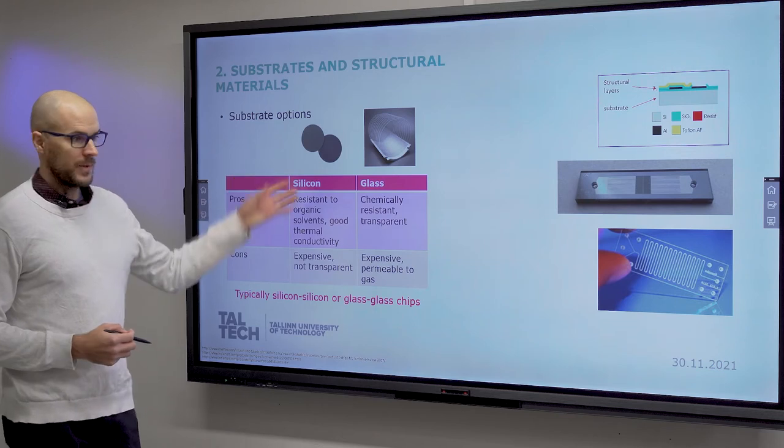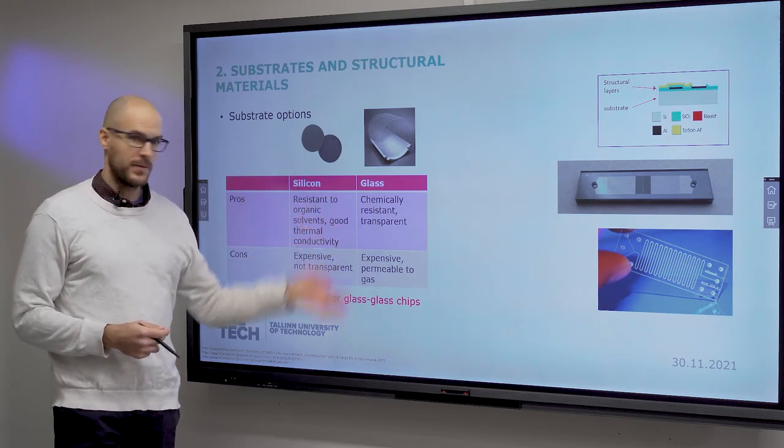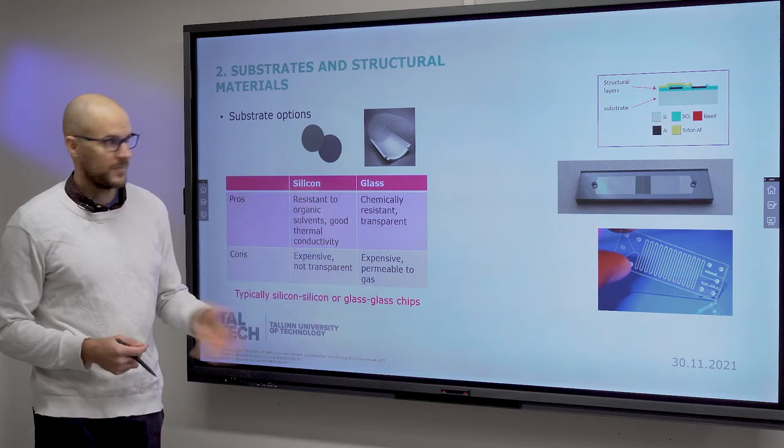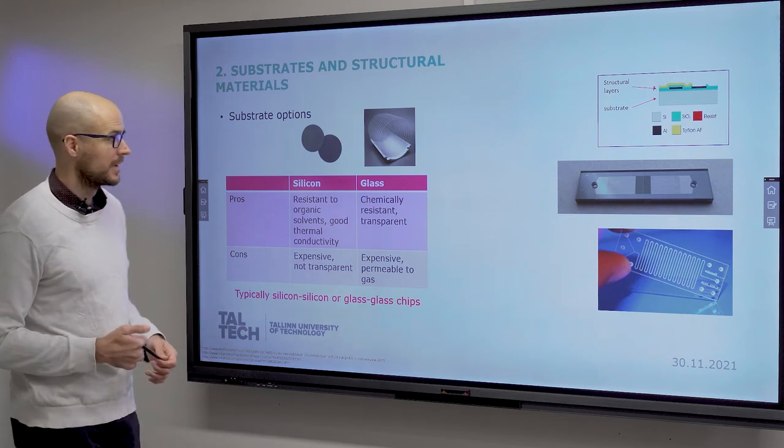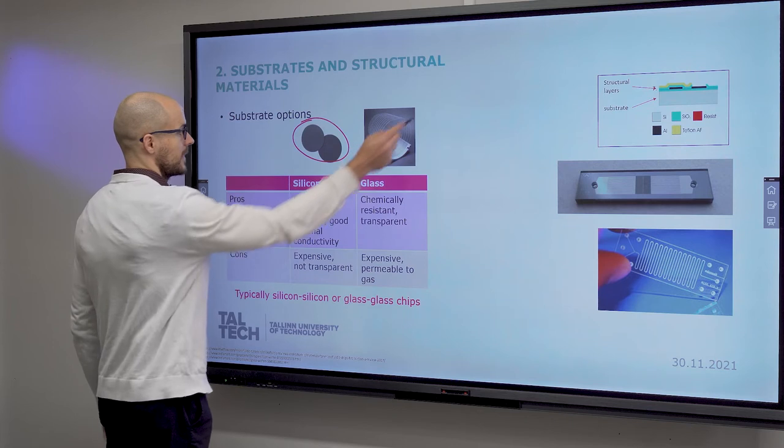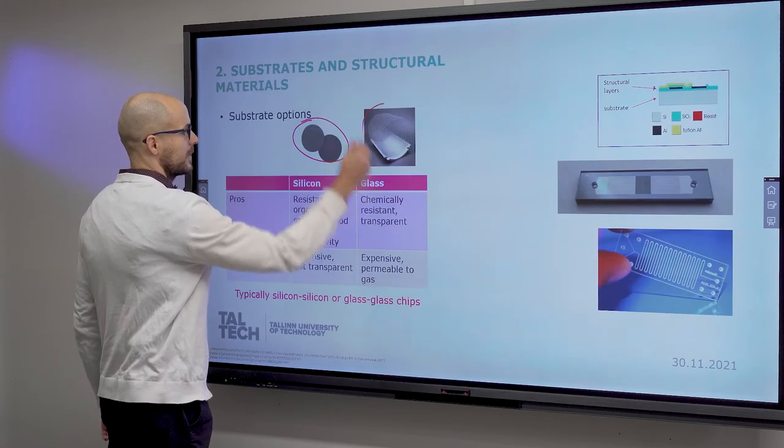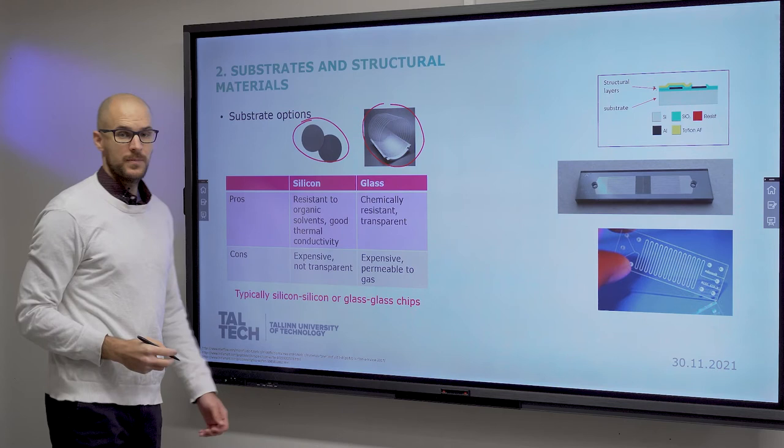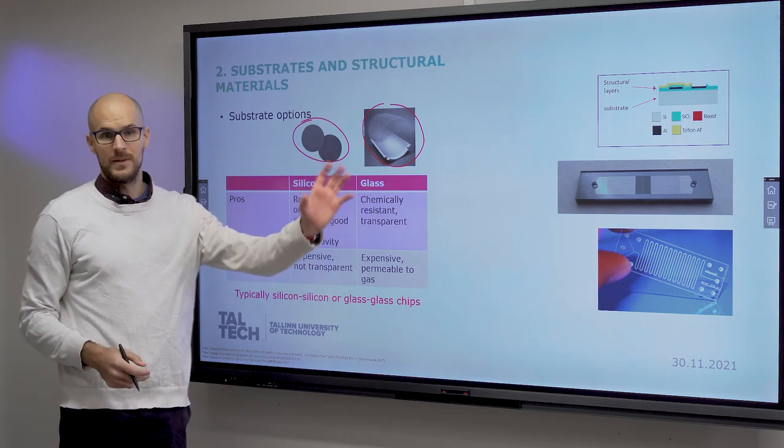Then, for the substrate. So, what you start with. Base layer, foundational layer, you can call it many names. Typically, it would be silicon or glass for us. Both in the form of wafers. Wafers meaning round disks.